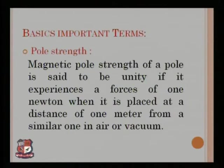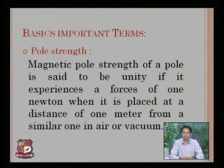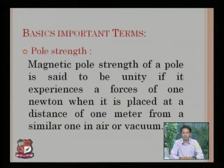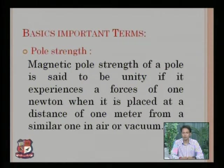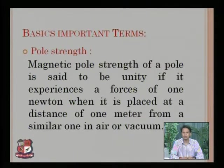Magnets have two poles: north and south. If we consider the magnetic pole strength of the north pole, it is said to be unity if it experiences a force of one newton when that north pole is placed at a distance of one meter from another pole. The force experienced by that north pole due to the other pole at one meter away in air or vacuum is one newton — that is defined as the pole strength.